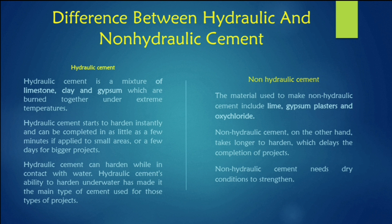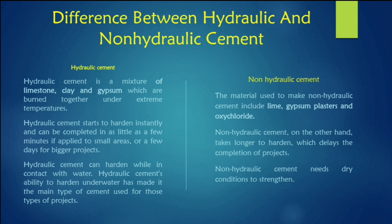Hydraulic cement is a mixture of limestone, clay, and gypsum burnt together under extreme temperature. Non-hydraulic cement uses materials including limestone, gypsum, plaster, and oxychloride. Hydraulic cement starts to harden instantly — within minutes for small areas or a few days for larger projects — and can harden while in contact with water. Non-hydraulic cement takes longer to harden and needs dry conditions to strengthen.